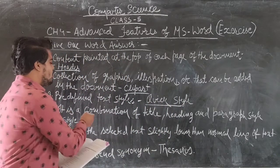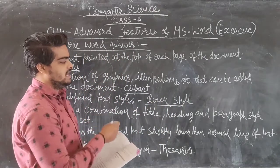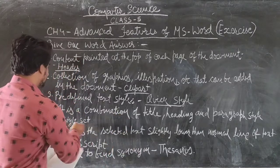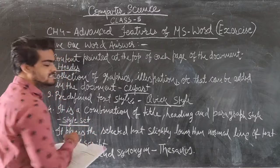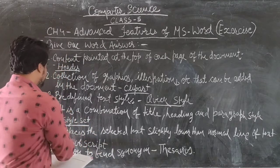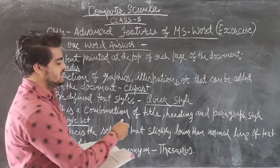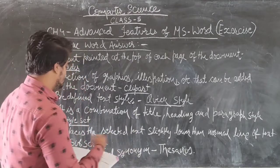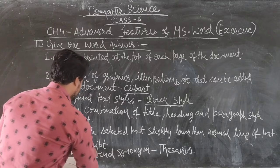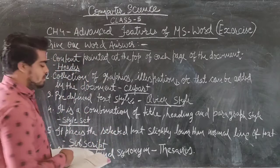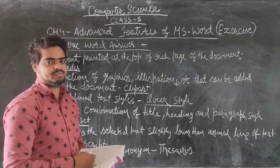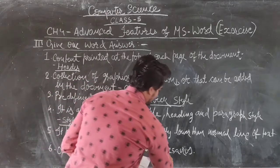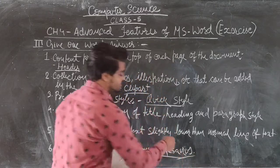Fourth one — it is the combination of title, headings and paragraph style. The answer is style set. Question five — it places the selected text slightly lower than the normal line of the text. The answer is subscript. Question six — the option to find synonyms. The answer is thesaurus.